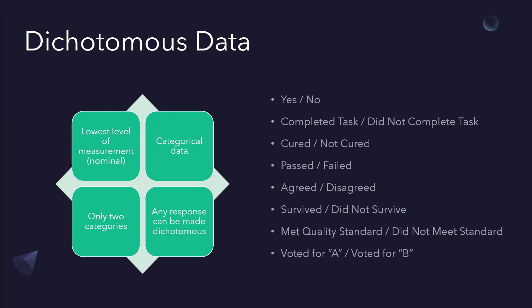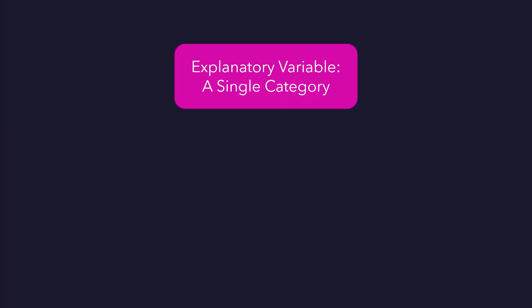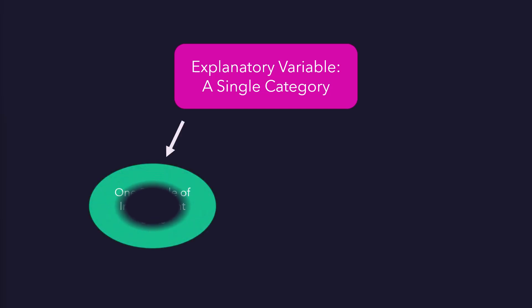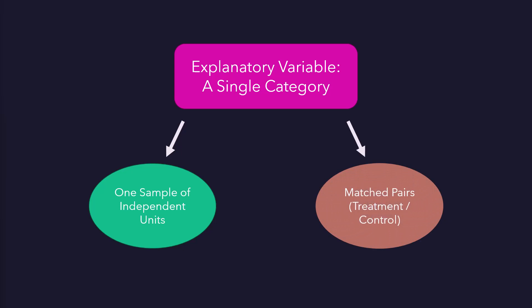In addition to keeping the response variable simple, we're going to employ the simplest explanatory variable as well — categorical with only a single category. This means we're employing one of two designs: either we have a single sample of independent units or study participants, or we're creating a single sample by drawing on a covariant dependency and creating matched pairs, using a measure of the pair rather than the individual as our response variable. The most common type of pair measure introduced in a first statistics course is the difference of the treatment participant score and the matched control participant score.